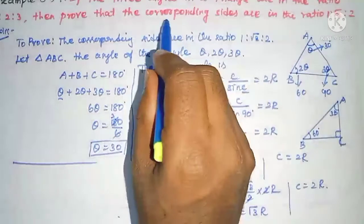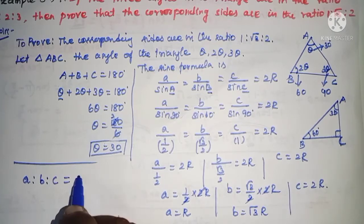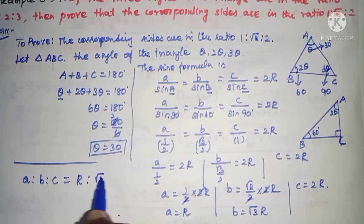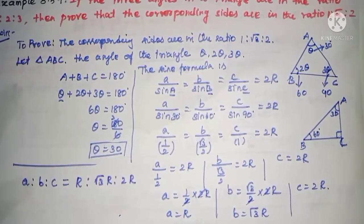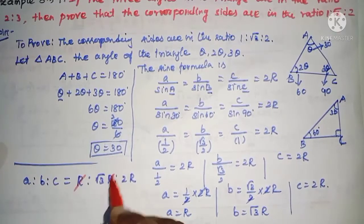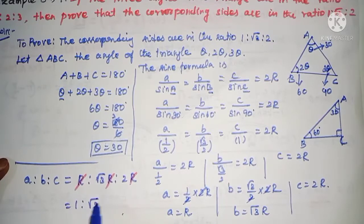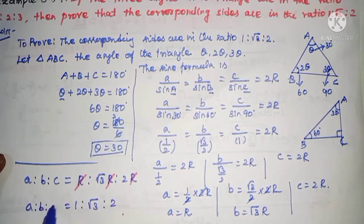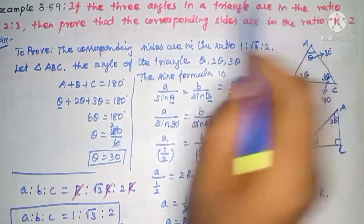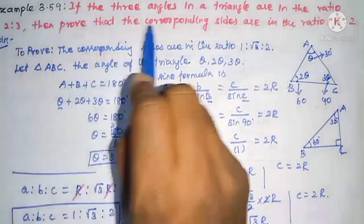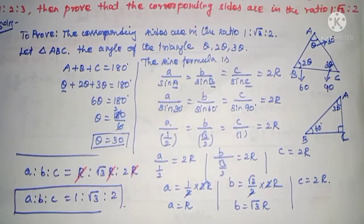So a = R, b = √3·R, c = 2R. The ratio a:b:c = 1:√3:2. When the 3 angles are in ratio 1:2:3, the corresponding sides are in ratio 1:√3:2 — hence proved. Thank you.